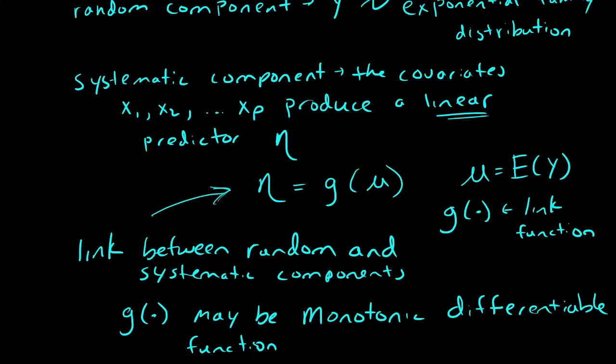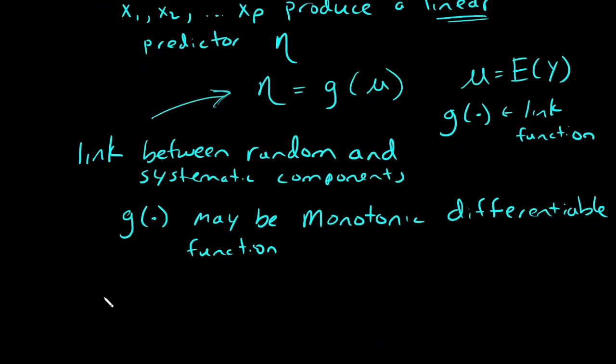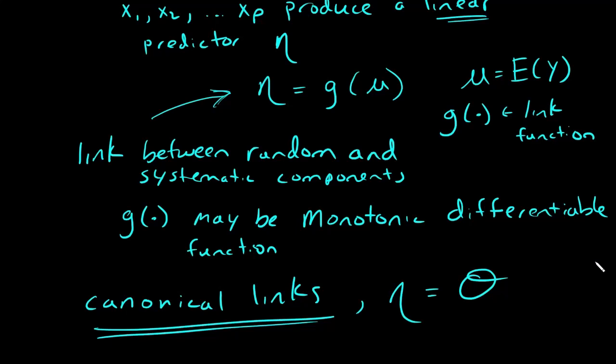Those are the canonical links. These are where we choose nu to equal whatever theta is. Theta, recall, is from the exponential family distribution.